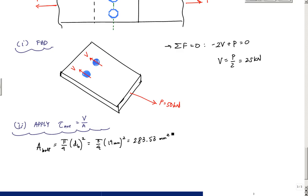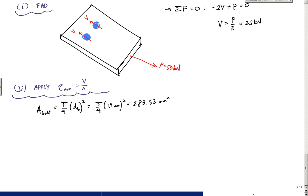And so now I can apply it to the formula. The tau average is equal to the V over area of the bolt, the shear across one bolt and the area of the bolt. And that's 25 kN divided by 283.53 millimeters squared.